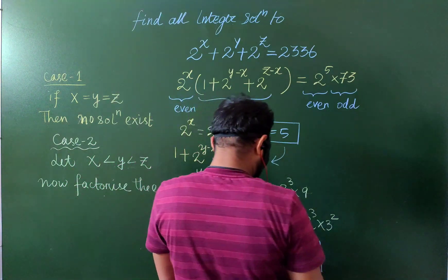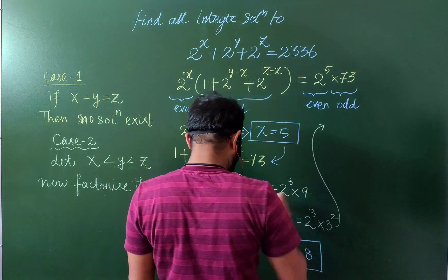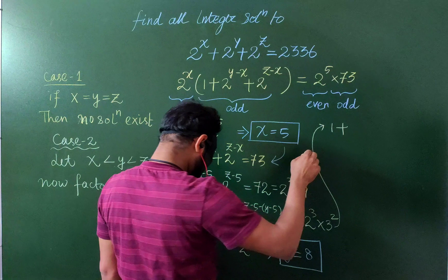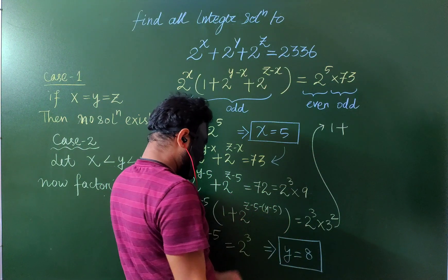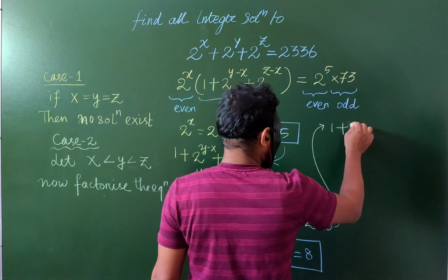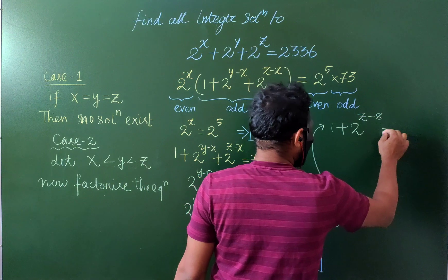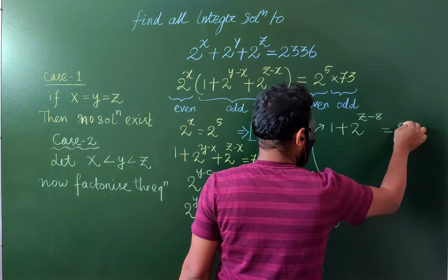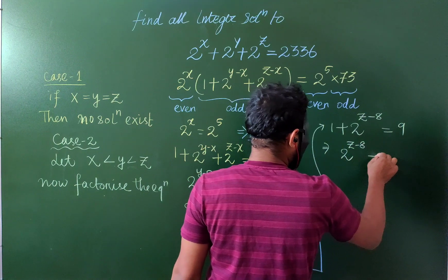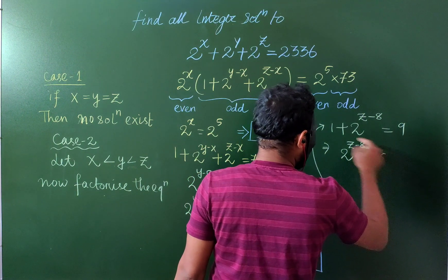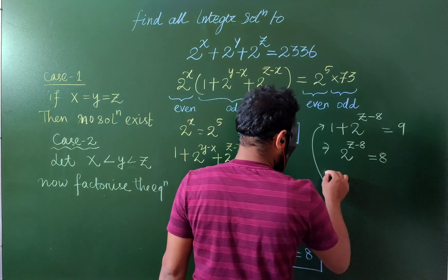Once we got y equals 8, the equation becomes 1 plus 2^(z-y) equals 9. Therefore, 2^(z-8) equals 8, which means z minus 8 equals 3, and from here z equals 11.